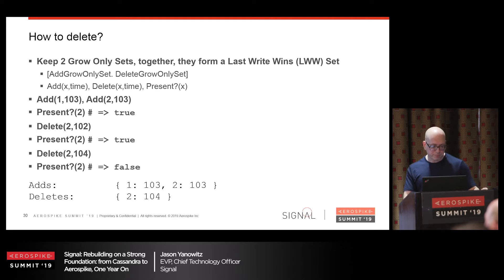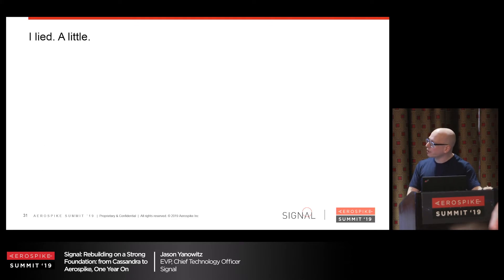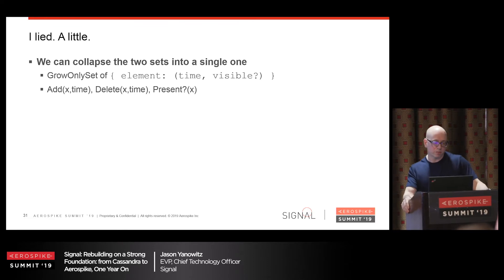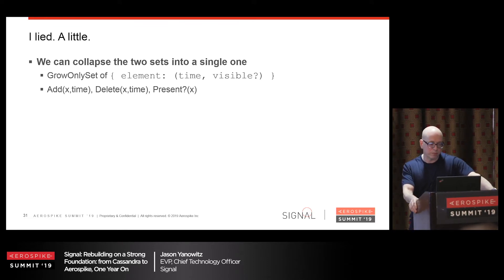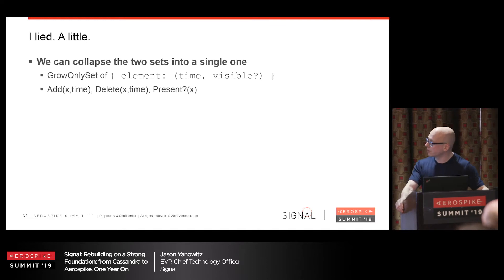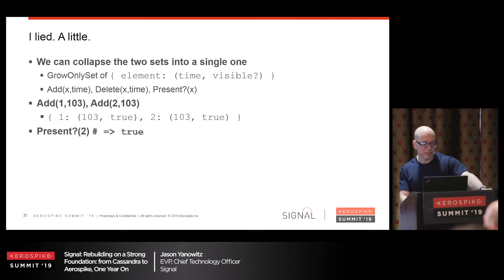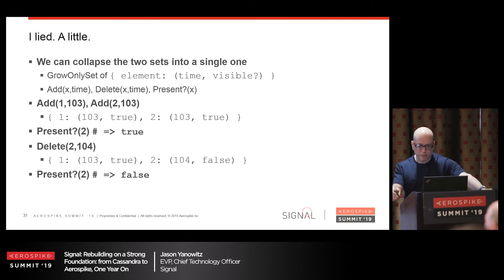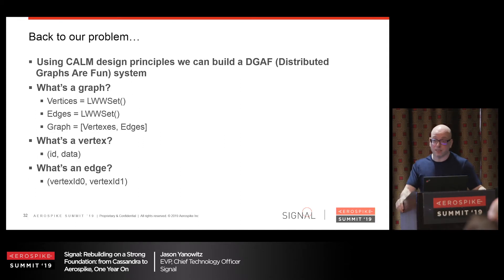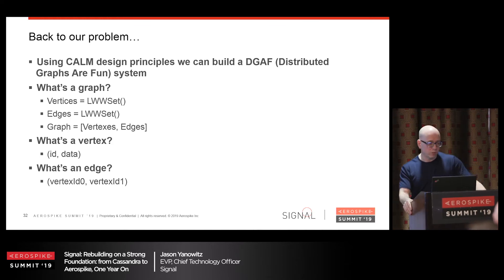For our particular use case, we can do a little better. Instead of maintaining two separate maps, we can condense it all: the keys are set members, but now we have a tuple for the value — the last message we saw and whether it was an add or a delete. The interface to the data structure doesn't change. A graph is just a set of vertices and a set of edges, so now that we can do sets as CRDTs, we're all set.